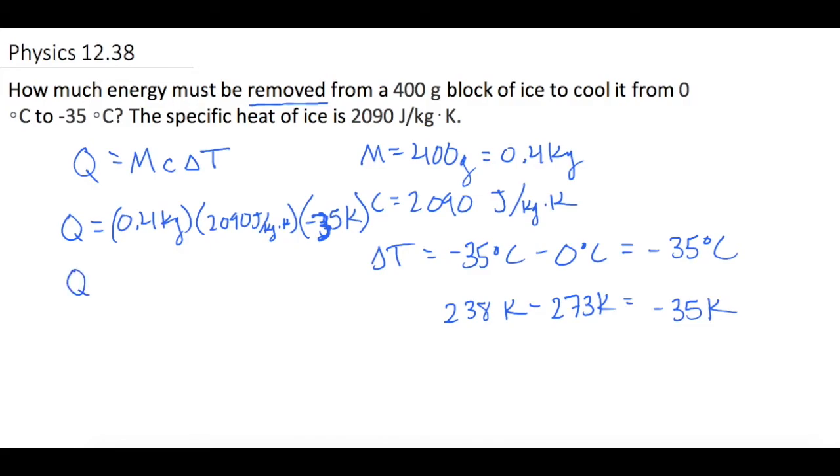So when we get that, Q is now equal to a negative 29,260 joules. We'll just take the magnitude of that, so 29,260, and then rounding it, we'll get 2.9 times 10 to the 4 joules.